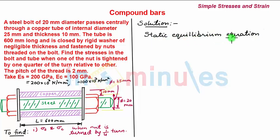We start with the static equilibrium equation, which is the force balance equation. The load on the steel bolt Ps plus the load on the copper tube Pc equals zero, as there is no external load applied. So Ps equals negative Pc. Let this be equation 1.